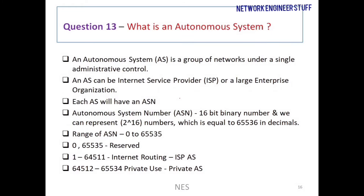Question number 13: what is an autonomous system? An autonomous system is a group of networks and devices which come under a single administration control. For example, a large ISP like Tata Communications has multiple networks and multiple devices — all of these come under one autonomous system. To represent this autonomous system we have something known as an autonomous system number, or ASN.